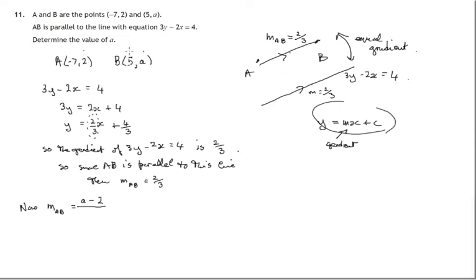So we've got (a - 2) over (5 + 7), which is 12. So (a - 2)/12 is equal to 2/3.